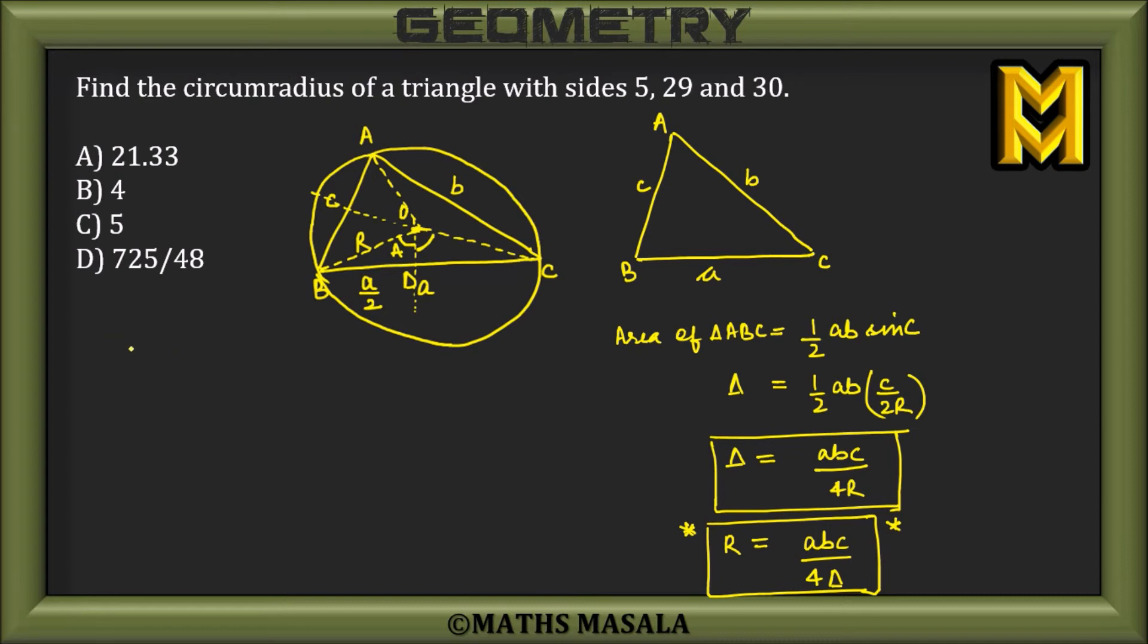Δ would be the area, calculated using Heron's formula. So if a is 5, b is 29, and c is 30, what would be s? s would be (5 + 29 + 30)/2, which is 32.